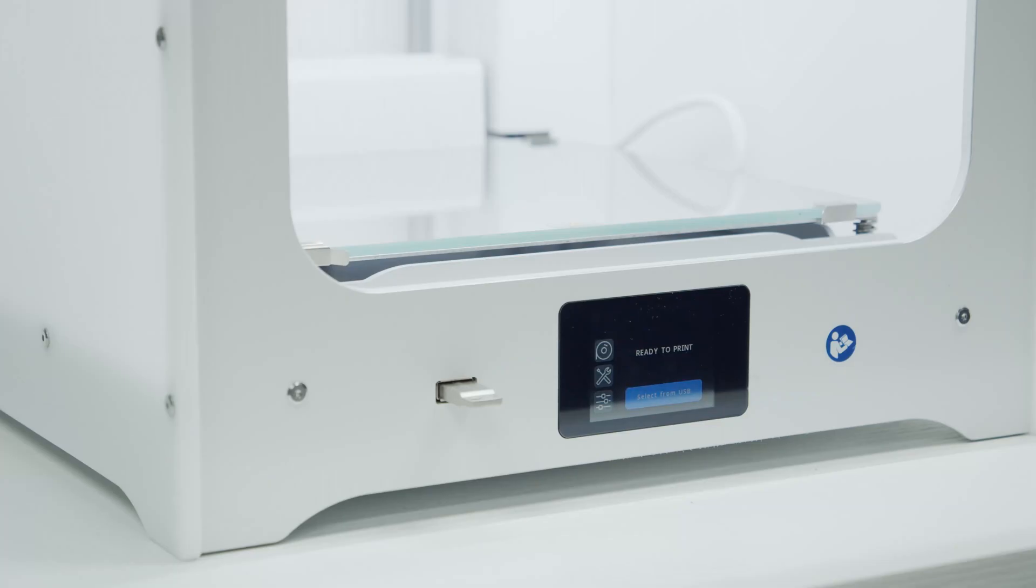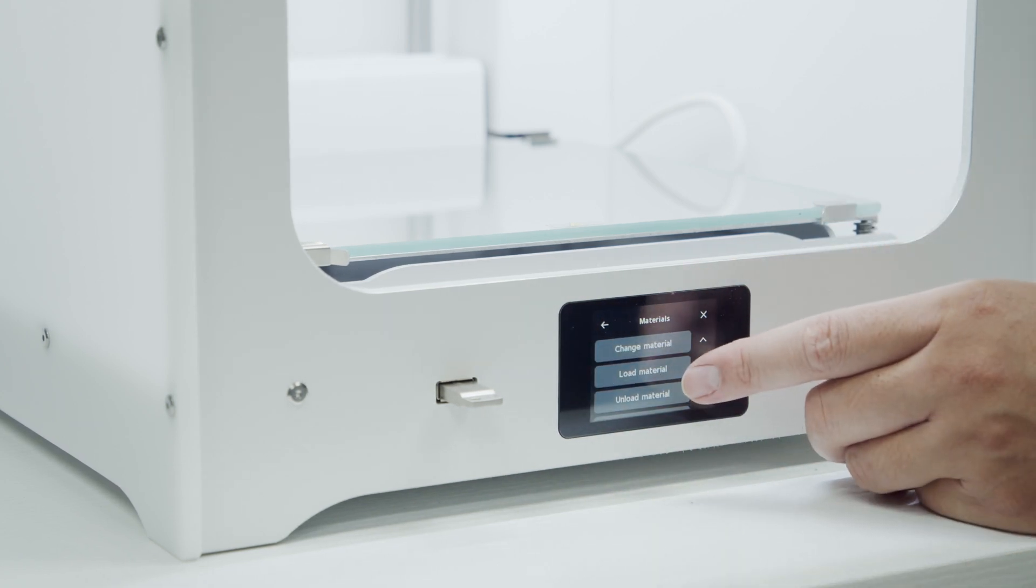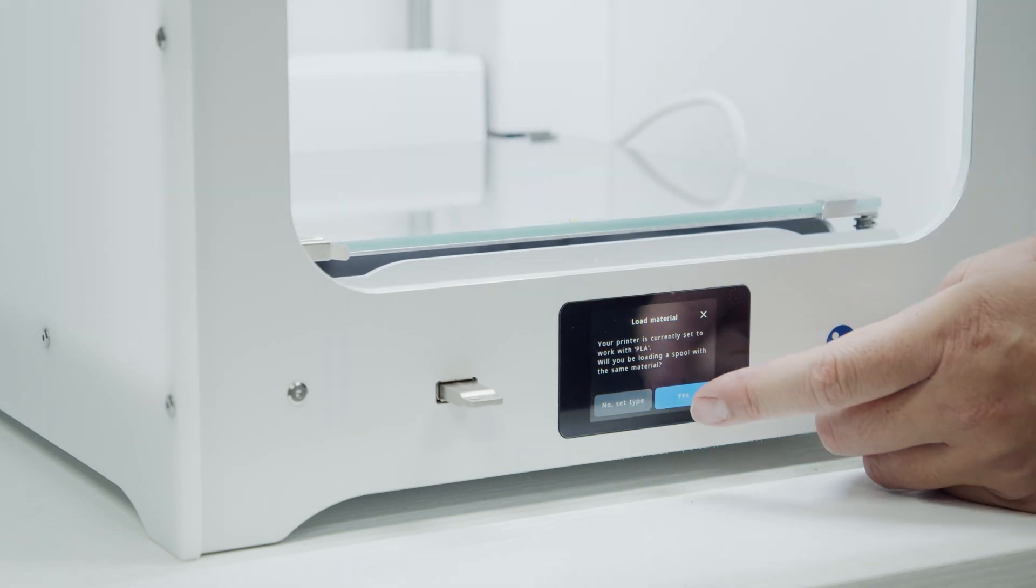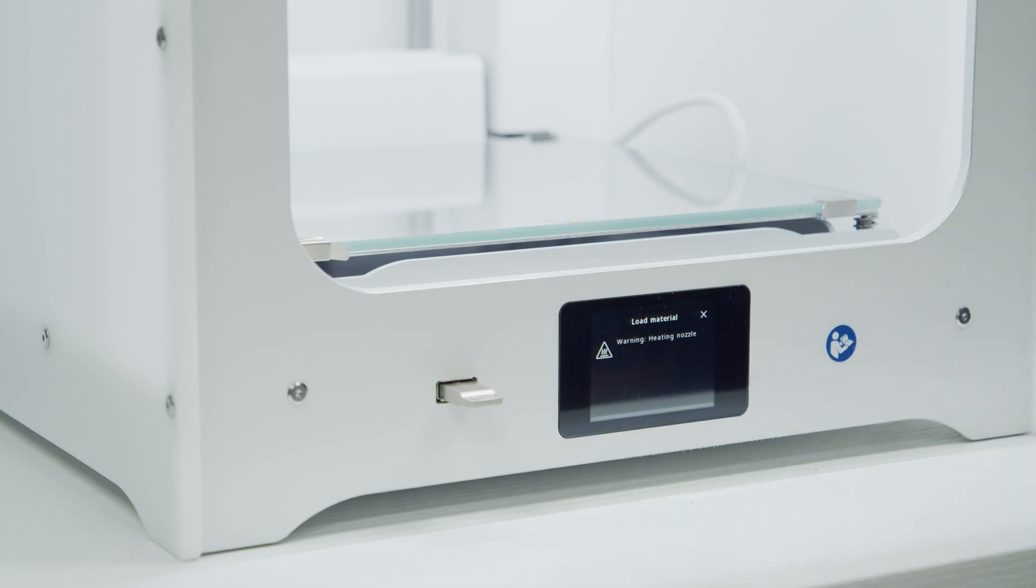Now, we can install the filament mount and load the material. Press the filament icon at the top left of the screen. Now hit load material. Press start installing material. The printer is set to PLA by default, which is what we've got for ours. So if you have PLA, go ahead and press yes.